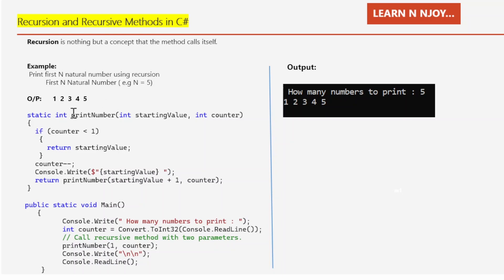For that, I have written one recursive method. This is the recursive method: `static int PrintNumber(int startingValue, int counter)`. This method returns int and accepts two input parameters — the first is the starting value and the second is the counter. First, I am checking whether the counter is less than one; if so, I return the starting value. Otherwise, I decrement counter by one using counter--, then print the starting value to the console.